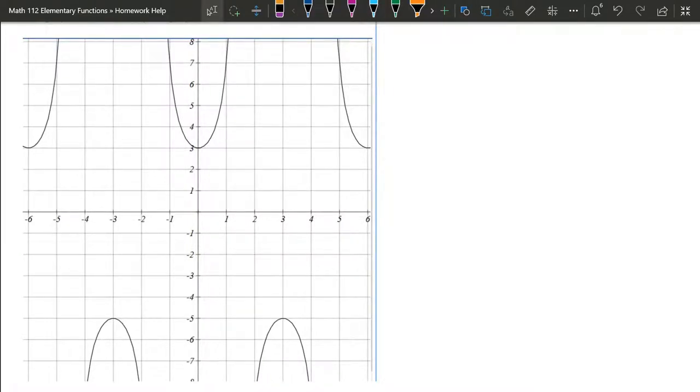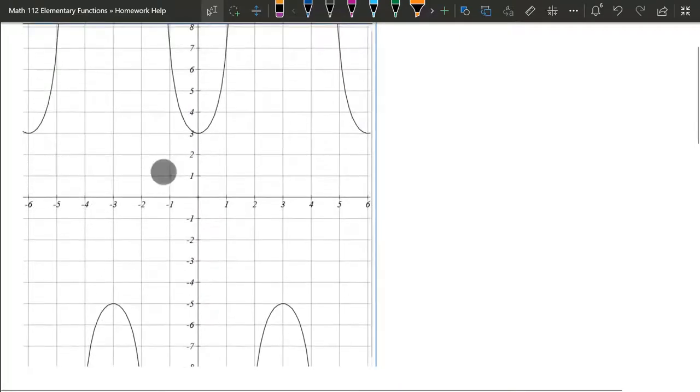Easier said than done. The vertical asymptotes are going to be halfway between these points I'm drawing here in blue. So it's between 0 and 3. So what happens here at 1.5 are the vertical asymptotes. 1.5, the other one happens at negative 1.5 because it's between 0 and negative 3.